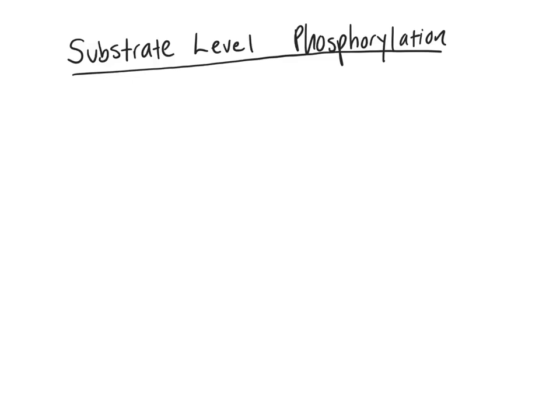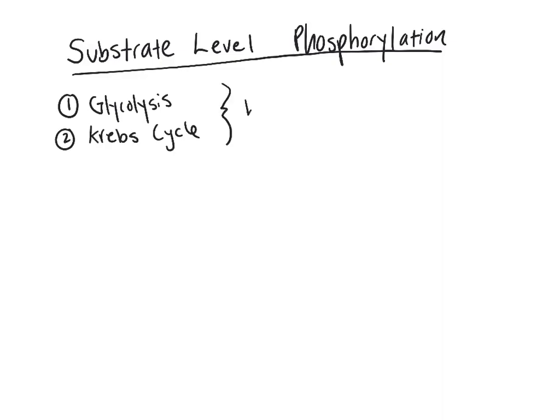This video is going to be about substrate level phosphorylation, which includes the first two steps of cellular respiration. The first step is glycolysis, and the second step is the Krebs cycle. Both of these processes break down glucose, which is the substrate, into products — in this case carbon dioxide and electrons — which are carried to the third step.